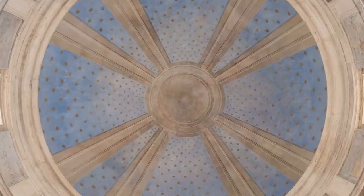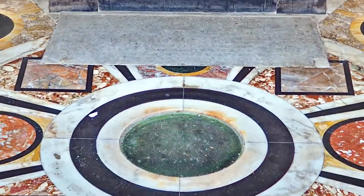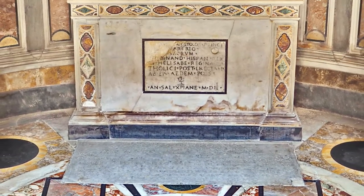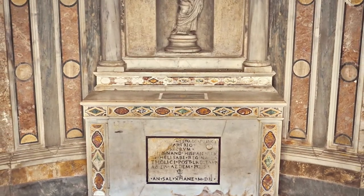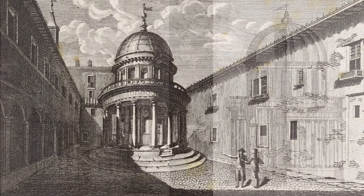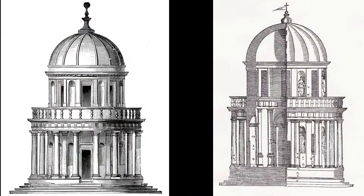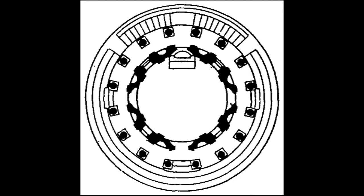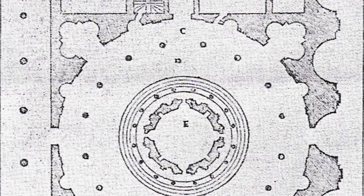Underneath the room is a simple crypt, where a plaque on the floor protects the hole that would have been left by St. Peter's cross. Besides this intrinsic significance, the Tempietto is widely considered a masterpiece of high Renaissance architecture, epitomizing its countless ideals and principles, especially the use of various perfect harmonious proportions and numerous geometric codes.